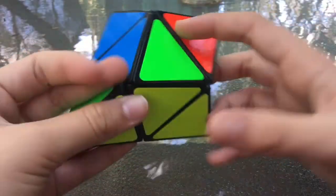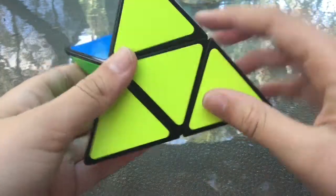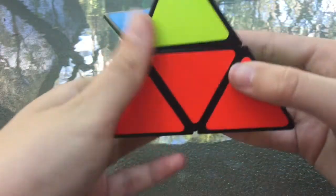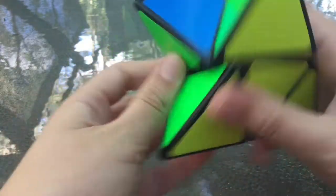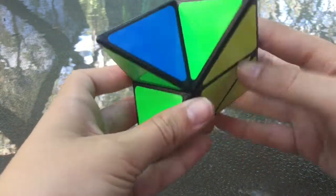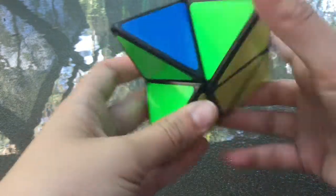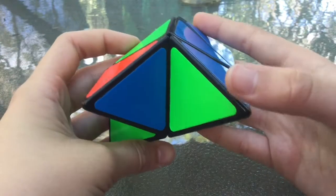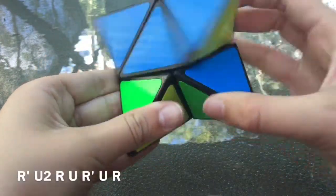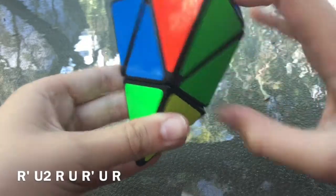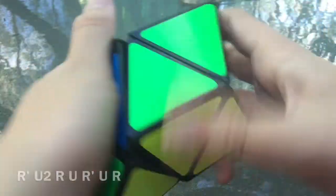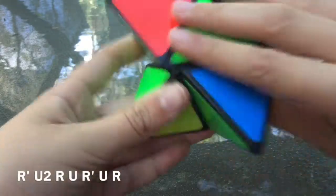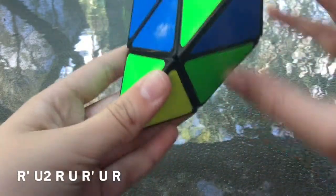Now, you may also get it where one of the tips are oriented correctly, like this one. See how that colour matches up. So, you should always check if any of them match up. If you have it like this, you do right inverted, make sure that one is in the bottom right-hand corner, which is here. And do right inverted, up two, right, up, right inverted, up, right. And you may have to repeat that again.